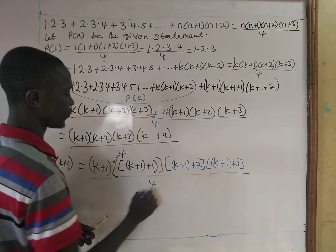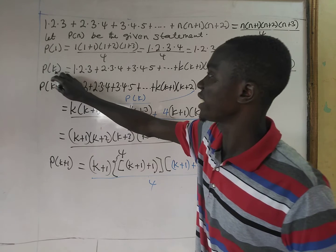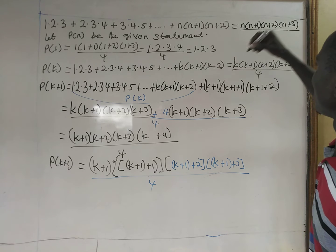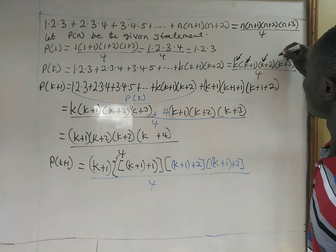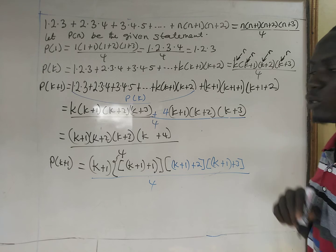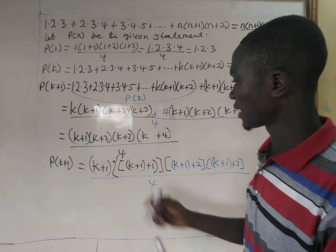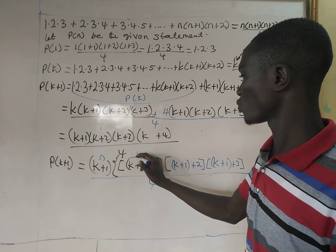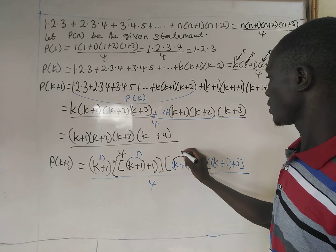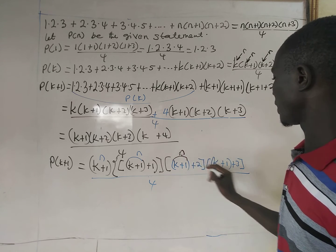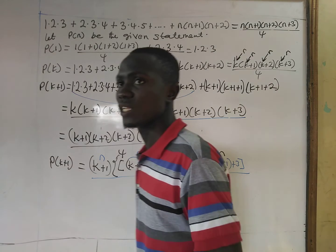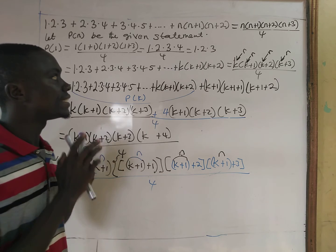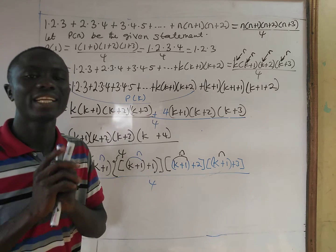All divided by 4. So P(k+1) equals (k+1)(k+1+1)(k+1+2)(k+1+3) all divided by 4. For P(k), k was representing n. Now for P(k+1), (k+1) is representing n in each factor. So whenever P(k) is true, P(k+1) is also true. Therefore, by the principle of mathematical induction, the statement P(n) is true for all natural numbers.